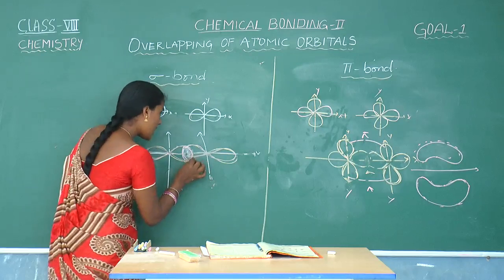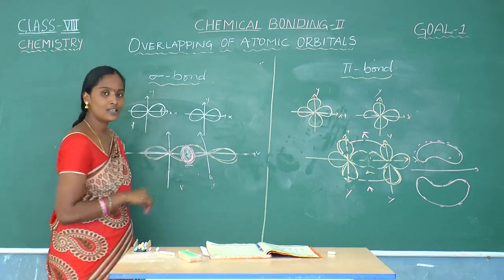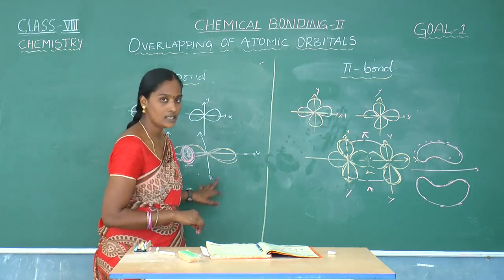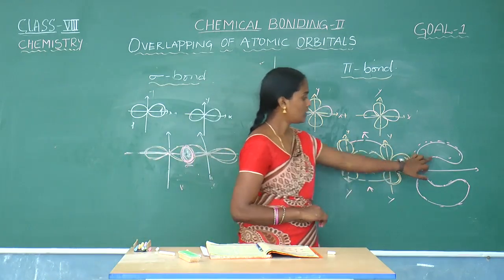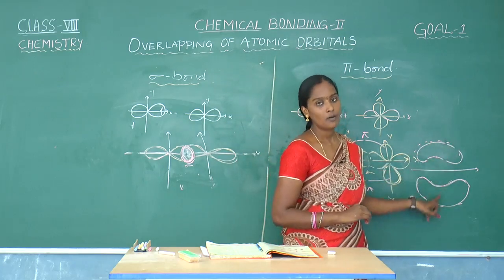Electrons are referred as they are particularly localized to this place, that is why these electrons are called as localized electrons. But here the electrons are moving above and below, so these are called as mobile electrons.